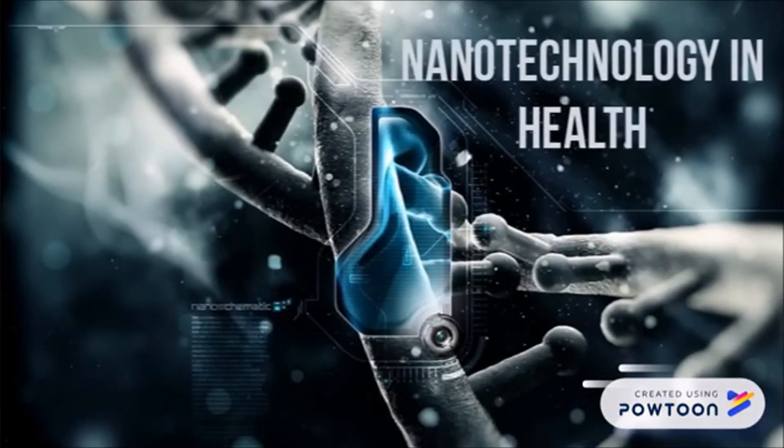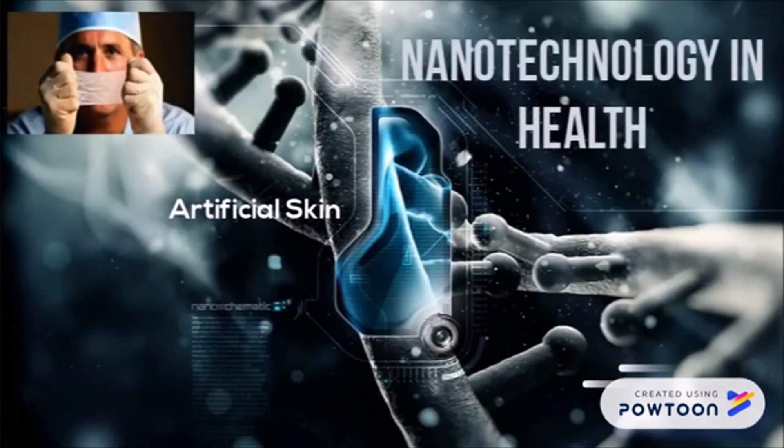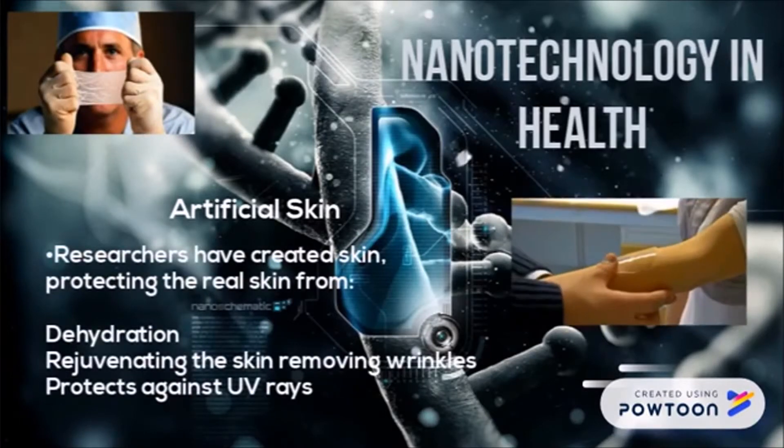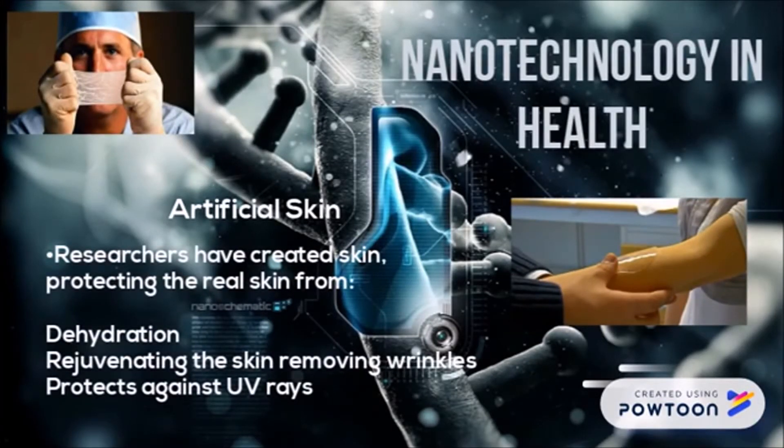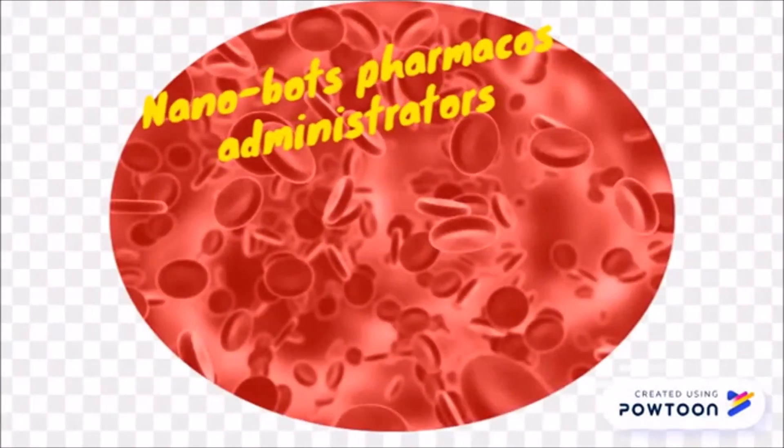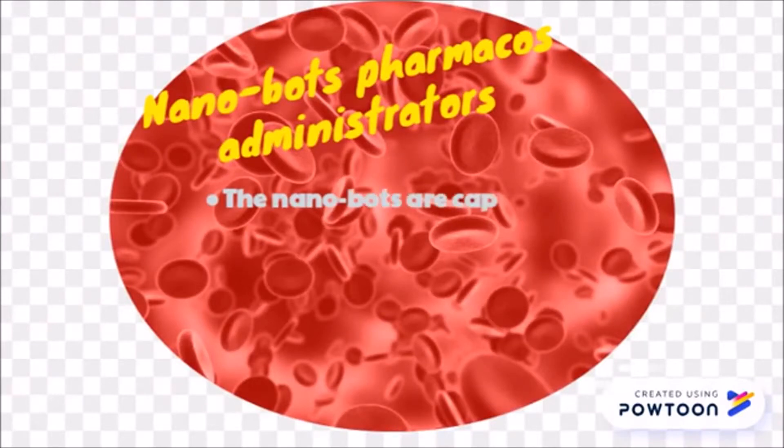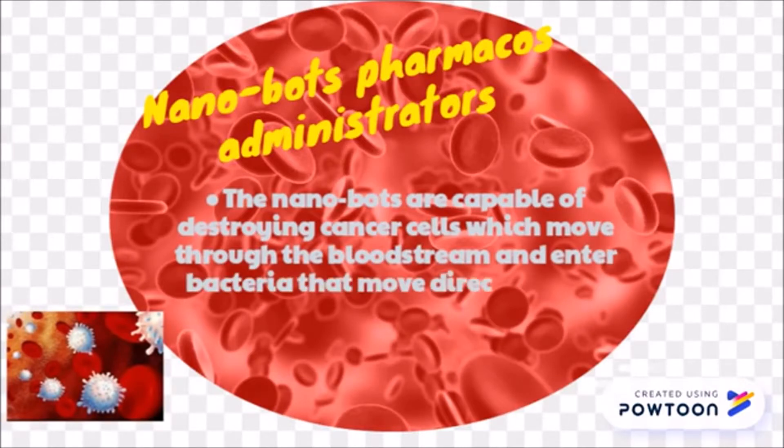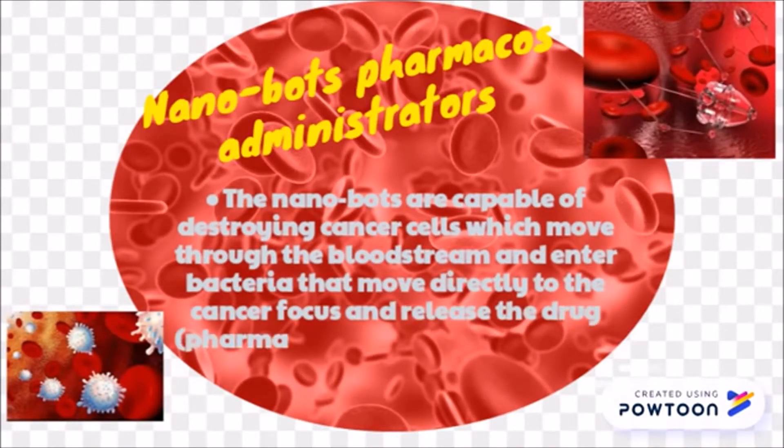Researchers have created artificial skin protecting the real skin from dehydration. In addition, rejuvenating the skin, removing wrinkles, and protecting against UV rays. Nanomaterials are used in health applications which are practically invisible. Nanobots are capable of destroying cancer cells. They move through the bloodstream and enter bacteria that move directly to the cancer focus and deliver the drug directly to the tumor.